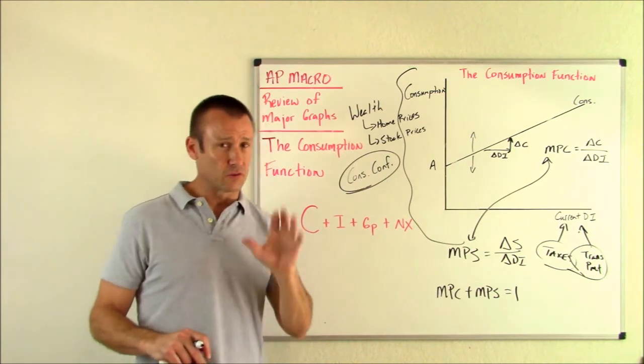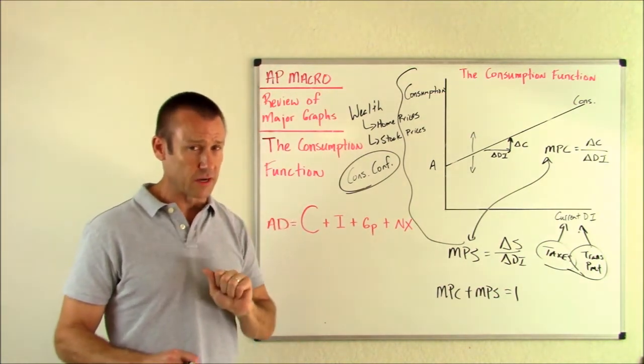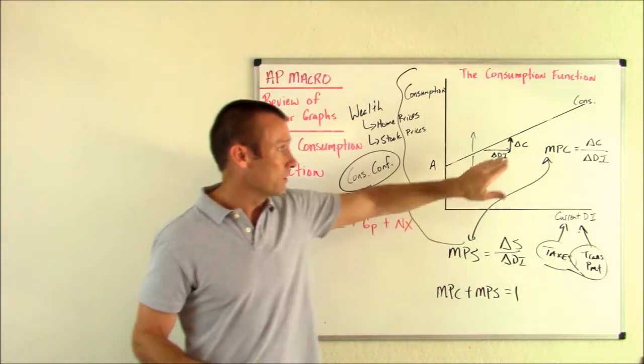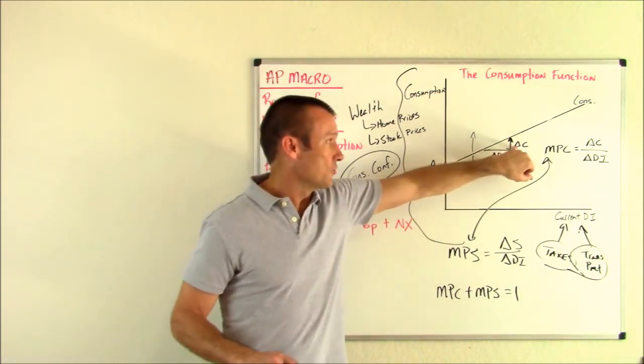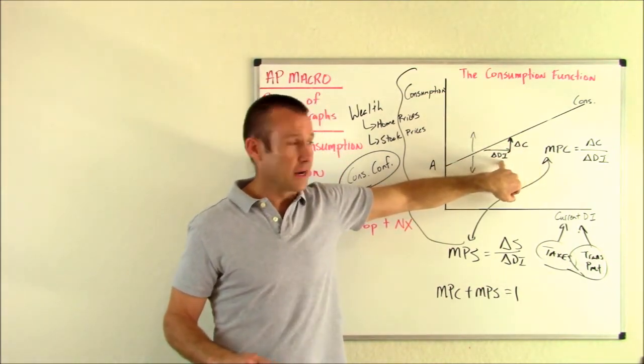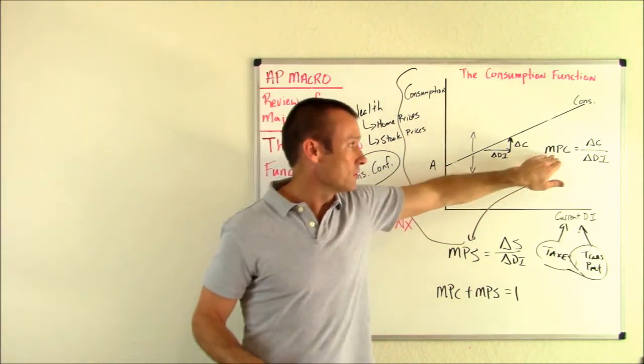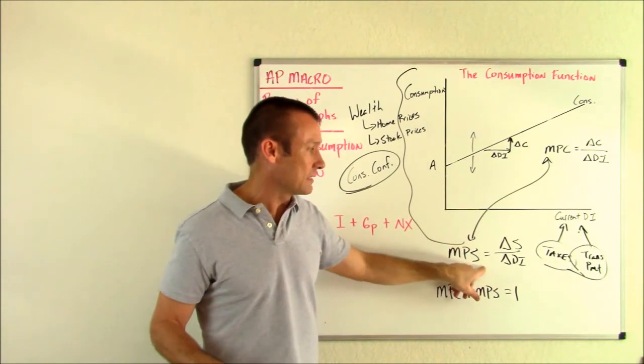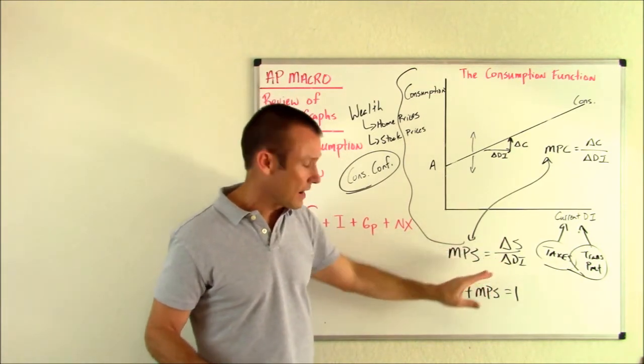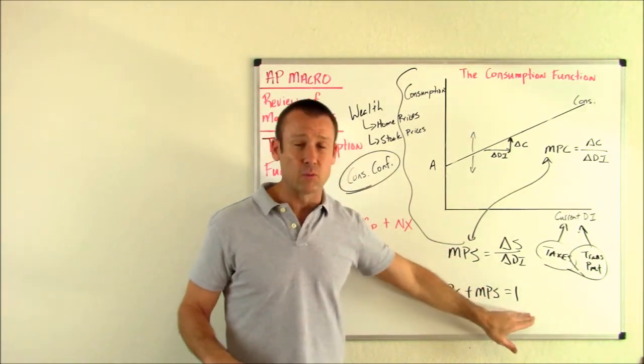And we know it. AD changes, real GDP and the price level change. And finally, again, what's the slope of that curve? The slope of that curve is our change in consumption over our change in disposable income, known as the marginal propensity to consume, which reminds us of our marginal propensity to save, delta saving over delta DI. And we know we add those together and we get one.